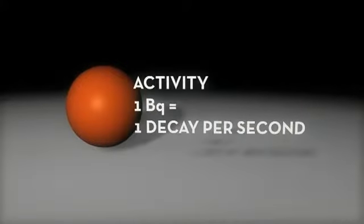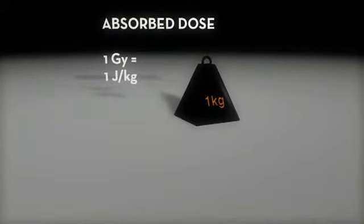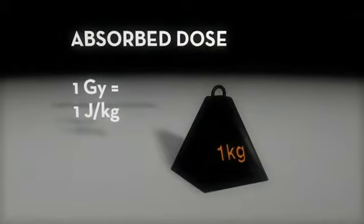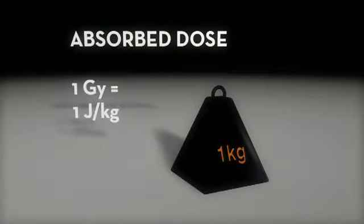Radiation releases energy when it hits a human being. Absorbed dose is the amount of energy released into the human being per kilogram of body tissue, and is measured in the unit of gray. 1 gray equals 1 joule per kilogram.